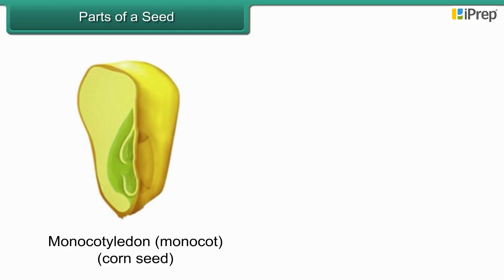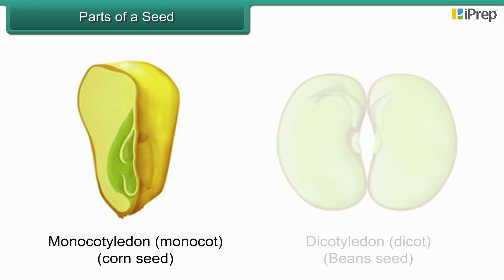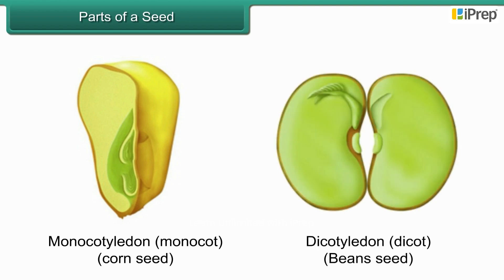A plant with one cotyledon is known as a monocotyledon, or monocot. Grass and corn seeds are monocots. A plant with two cotyledons is known as a dicotyledon, or dicot. Bean seeds are dicots.